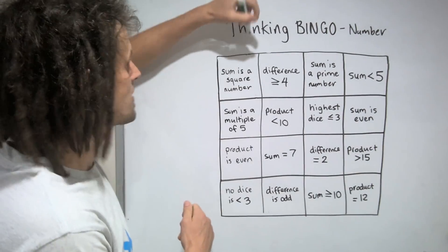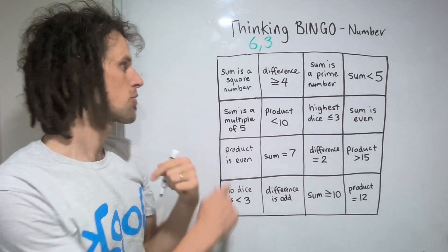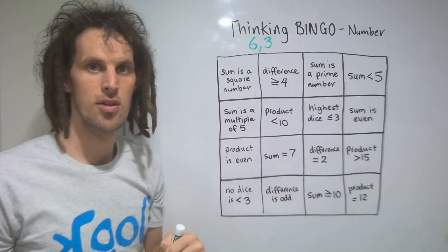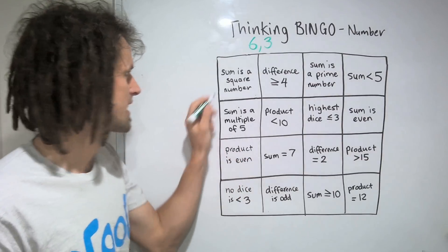The teacher rolls two dice, for example, a 6 and a 3. Then players need to go through every statement on their grid and work out which of them satisfy that dice roll. So I'll just do that really quickly now.